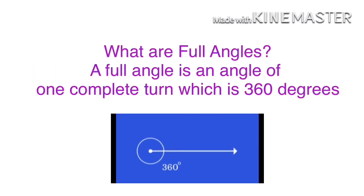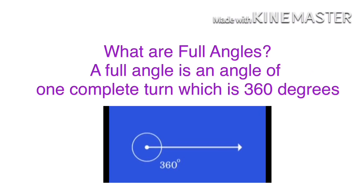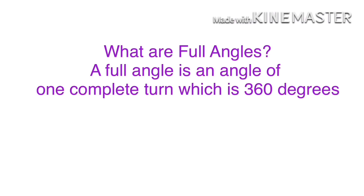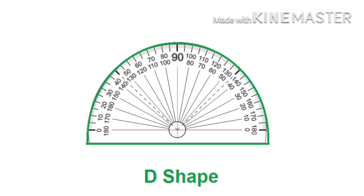Now let us learn what are full angles. A full angle is an angle of one complete turn, which is 360 degrees. It is also called a complete angle. We can measure angles using an instrument called a protractor. The protractor is D-shaped.